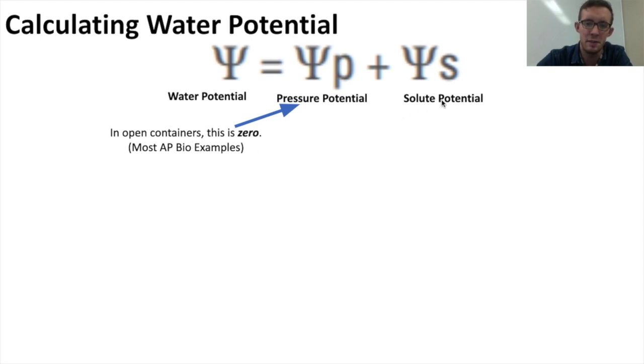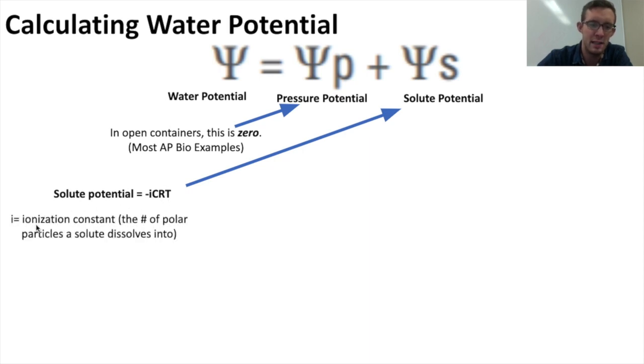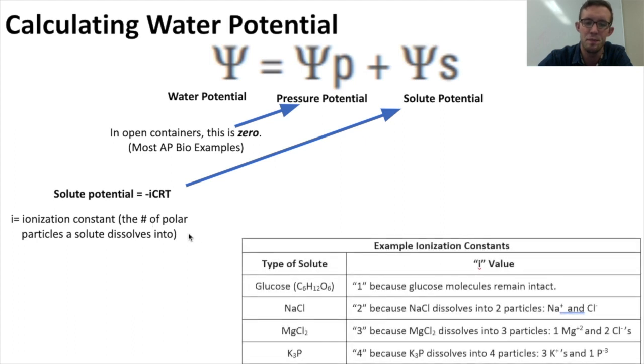Meanwhile, the solute potential is a factor of four different variables, and it's expressed as negative I C R T. So what do these stand for? I stands for ionization constant, which sounds really technical, but the ionization constant of a solution is just the number of particles that its solute dissolves into.